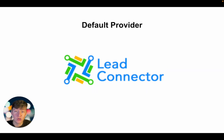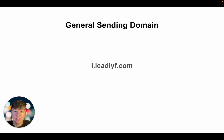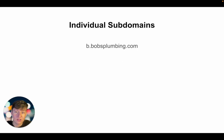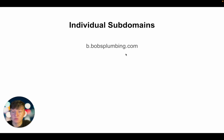To recap: by default, you're connected with the Lead Connector email system — you don't want to use it because you'd share the same domain as everyone on Go High Level. The second way is creating a general sending domain, like l.leadlife.com, that every user on your white label software will use. Third, you can create a subdomain off your domain for each client — like clientname.yourdomain.com — so they have their own individual reputation. Finally, the fourth and best solution is giving your client their own individual domain, though it's the hardest because you'll need access to their domain provider records.